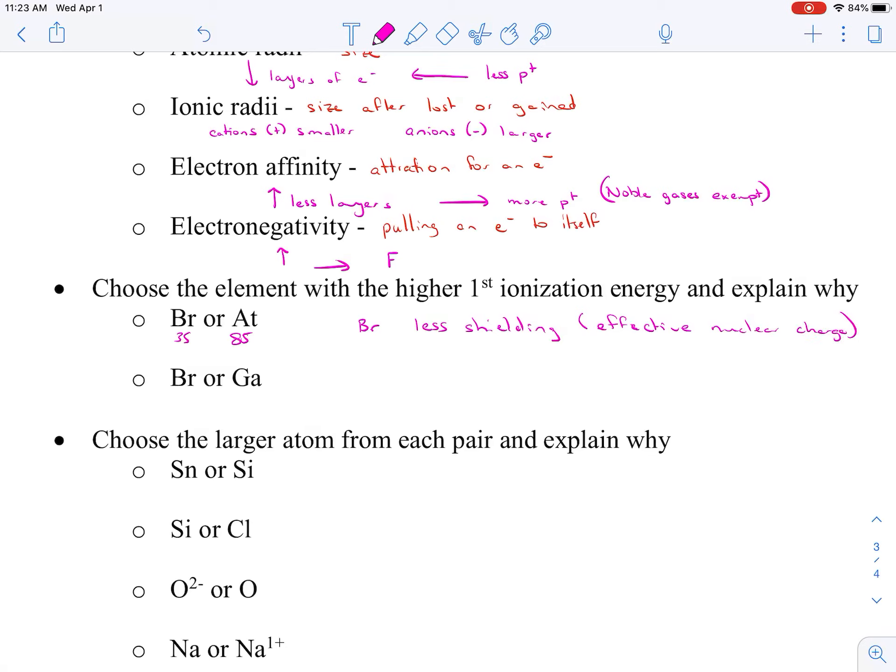If we wanted to use the big kid word, we could say a greater effective nuclear charge. We use bromine again, and this time we have bromine and gallium. They are in the same row, but bromine is further to the right, so we're going to say bromine again has a higher first ionization energy. And why is that? That is because it has more protons. Please do not say it's closer to a full valence shell. That would be incorrect.